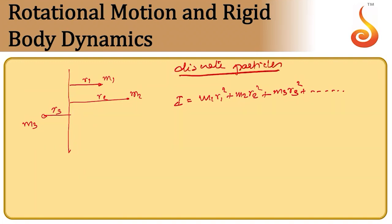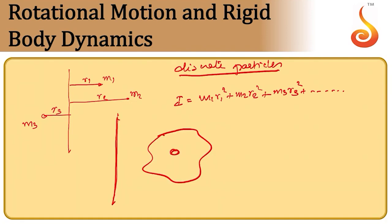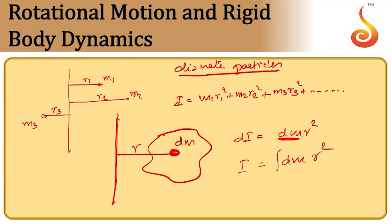For a continuous mass distribution rotating about an axis, take a small mass dm at distance r. The moment of inertia of this element is dm·r², so the total moment of inertia is I = integral(r²·dm). This is the moment of inertia of a continuous mass distribution.